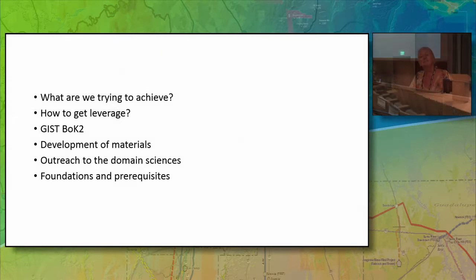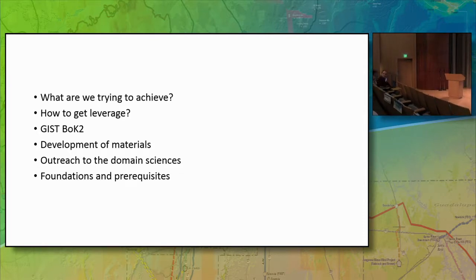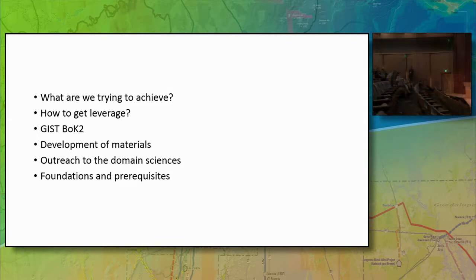Would this fall into the category of 'sprinkles'? Book chapters have been described to me as sprinkles — they're not very good by themselves, but if you put them on top of an ice cream bowl filled with IJGIS papers, then they are delicious. For people who have sat on T&P committees, how would you view this? I don't think my department is in that place. I'd be interested to hear from people who could potentially be evaluating these things. When I go up for tenure, what do you think?